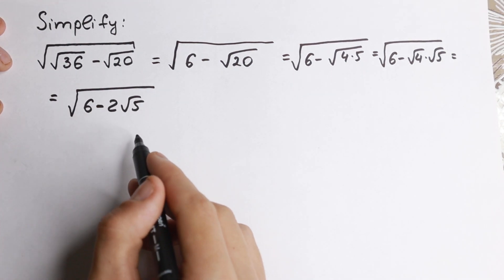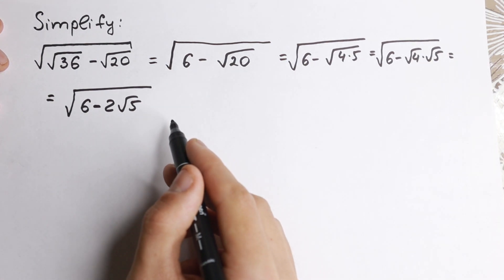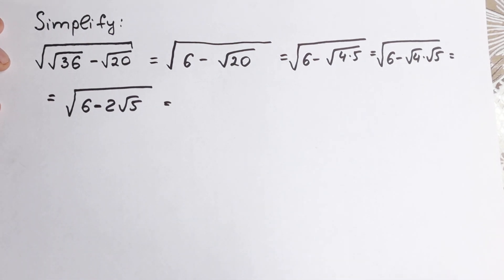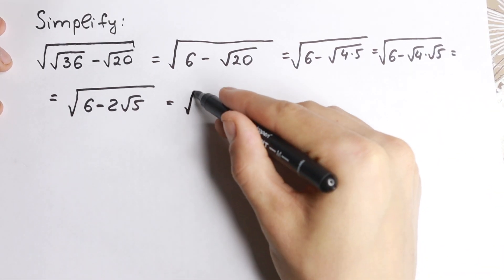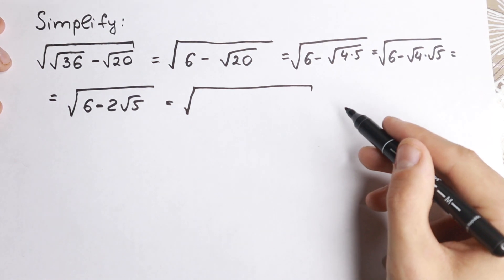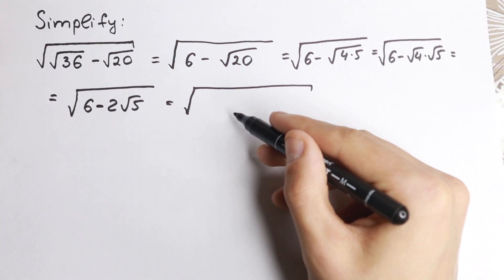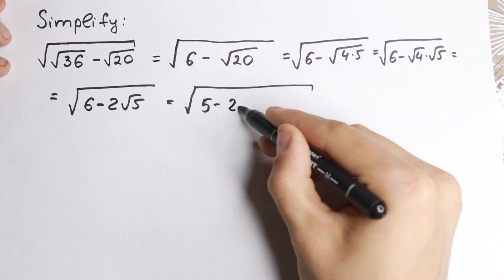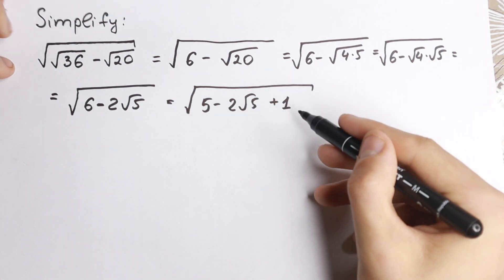This is our expression after this simplifying step. But what we're going to do next — I'm going to show you a really good trick, because there's no general formula here. Let's write this 6 as 5 plus 1, so we have 5 minus 2 square root of 5 plus 1.